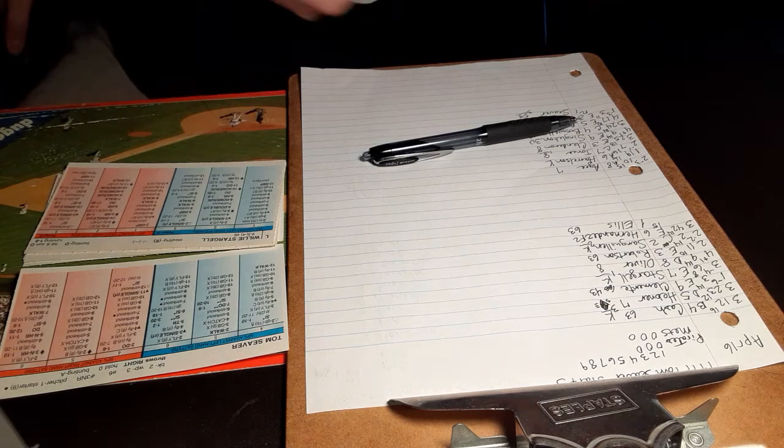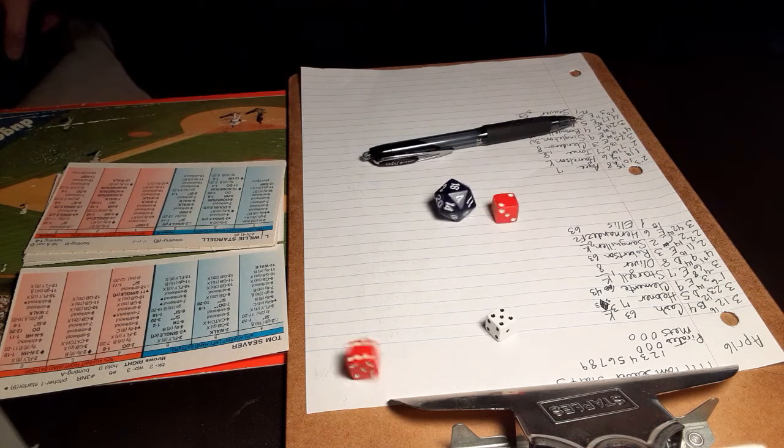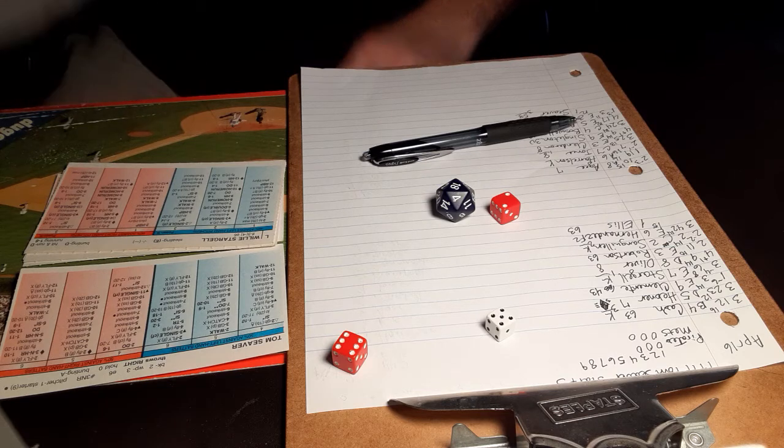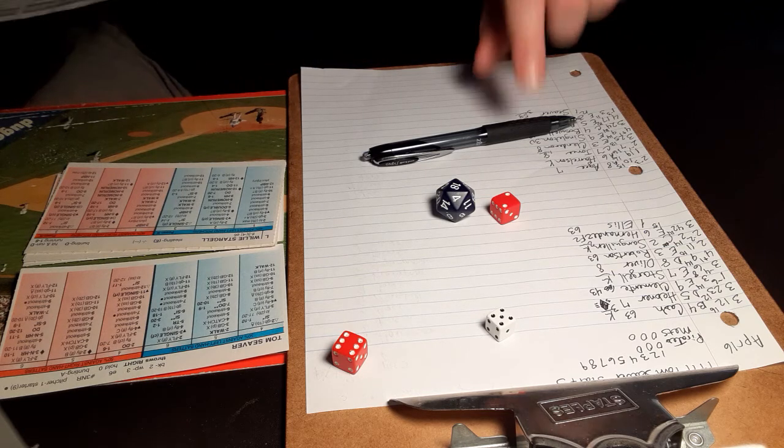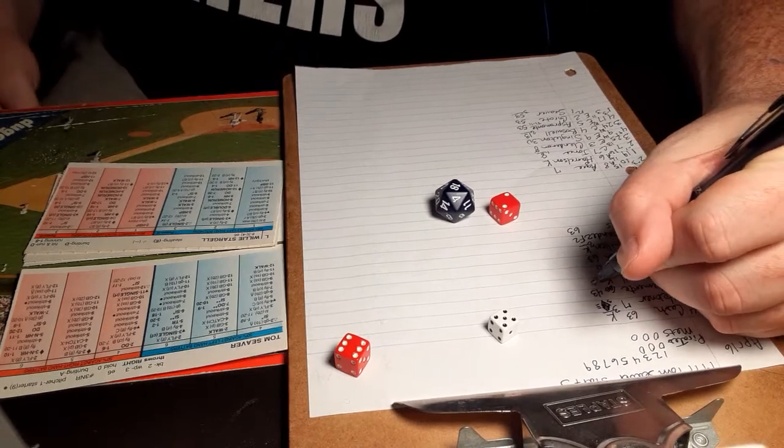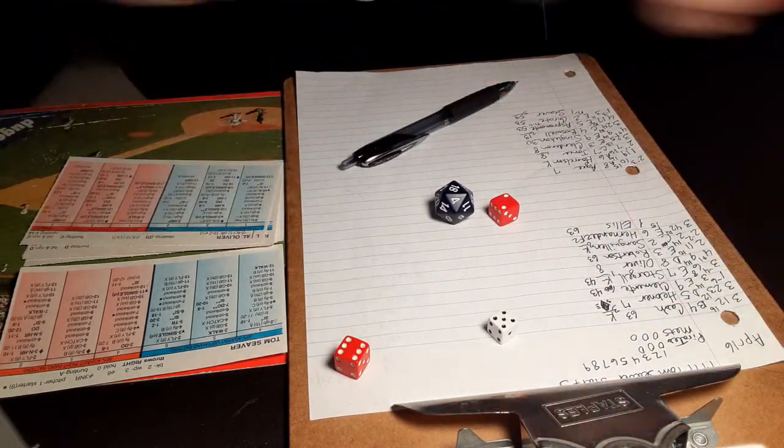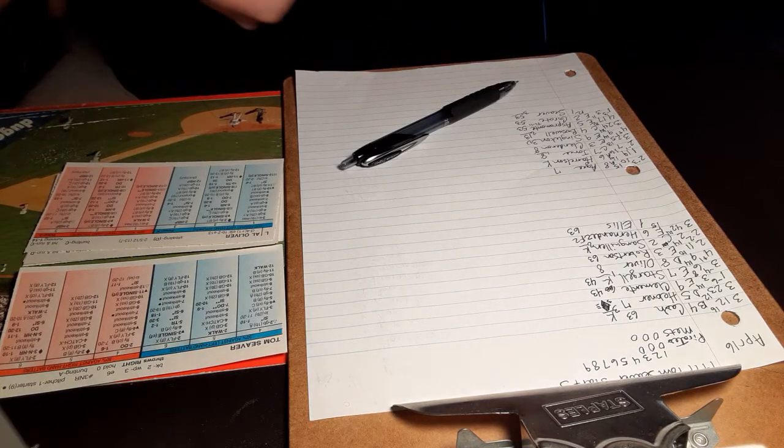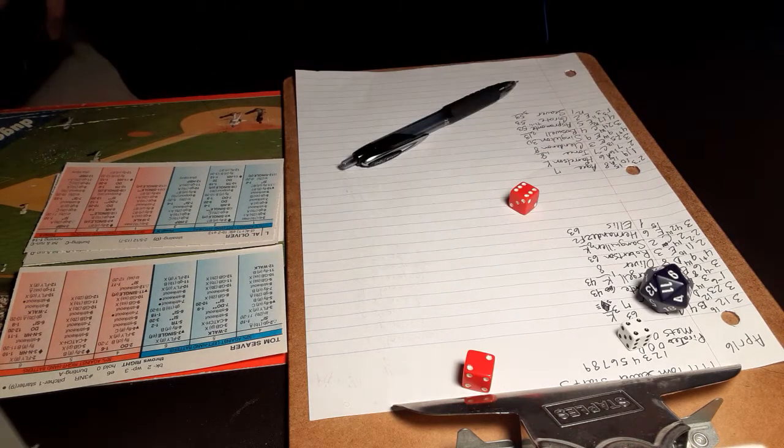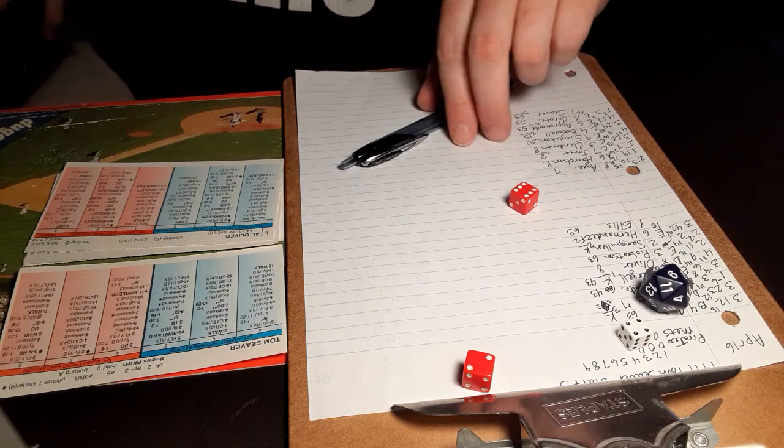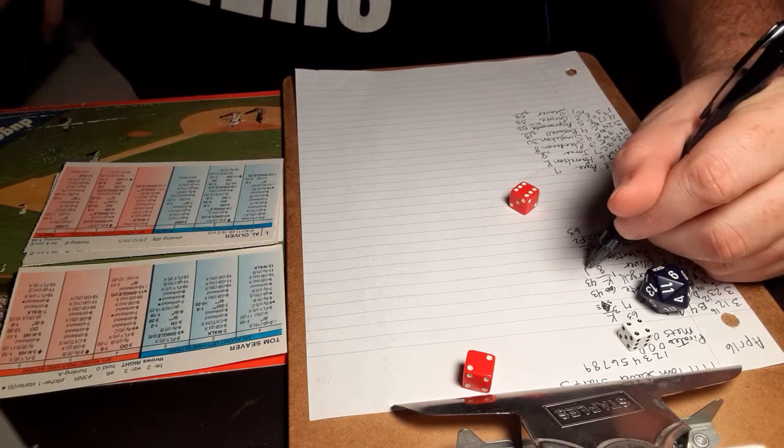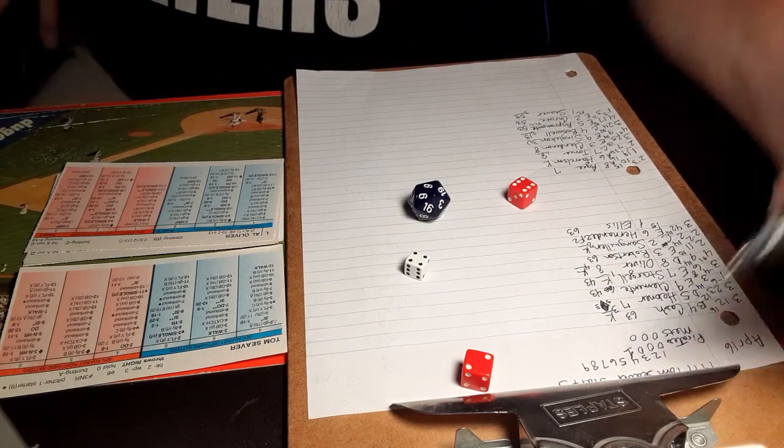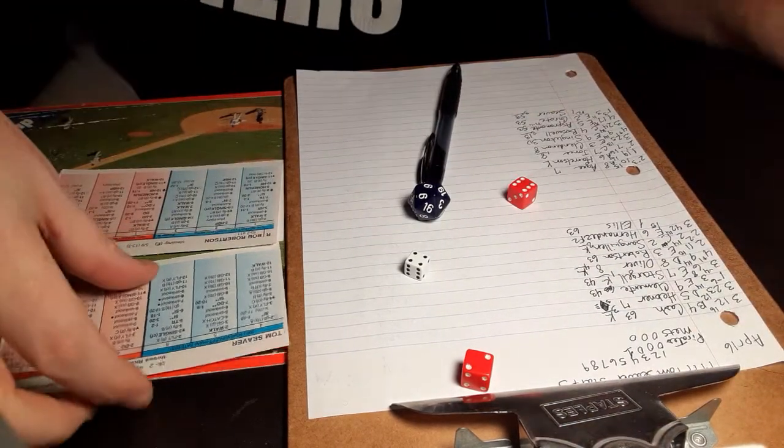Clemente, hard ground ball to second. Boswell handles it, throws to first, but the run from third will score. Yes, I'm using super advanced running charts because I hate the advanced running charts. On a ground ball A to second base, the runner scores. So 1-0 Pirates. And here's Willie Stargell, one out and nobody on. 5-8 also to Boswell, but this is a little bit easier play, and he will make it. Two down. And here is Al Oliver. 4-8 lefty, swing and a miss, strike three. So Seaver retires the side, but not until the Pirates take a 1-0 lead.